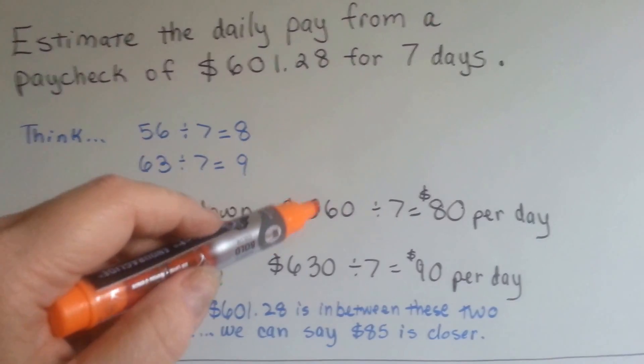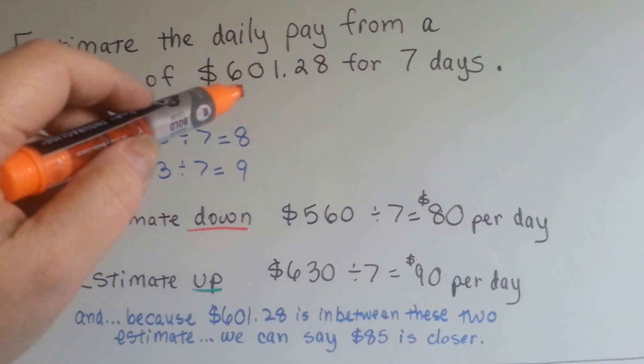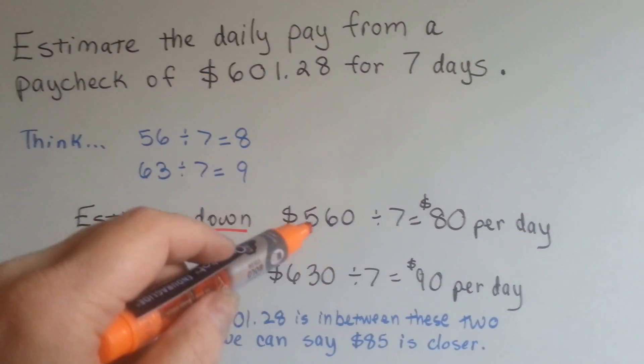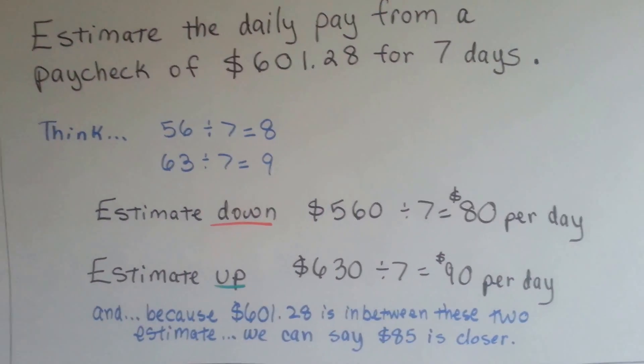And actually, because 560 and 630 are on each side of this number, we could go in the middle because it's in the middle. And we could say about $85 a day, couldn't we?